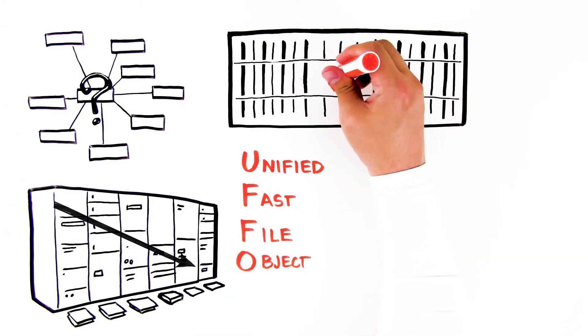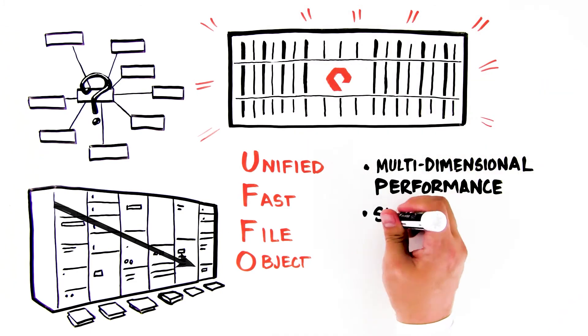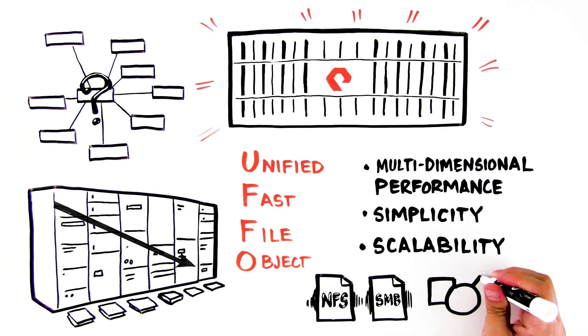Because FlashBlade is purposely built for modern data, it delivers multidimensional performance, simplicity, and scalability. It supports both NFS and SMB file protocols and S3 object protocol, replacing the need for multiple appliances to handle these workloads.